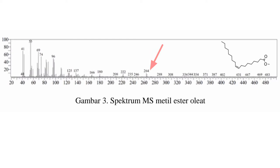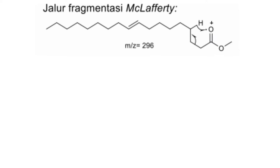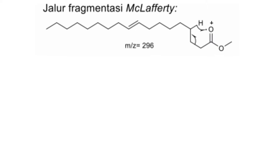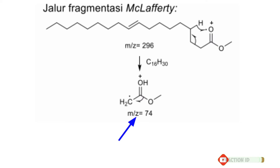Spektrum MS ini dapat dilihat pada gambar 3 dan mekanisme fragmentasinya selengkapnya dapat dilihat pada gambar ini. Untuk teman-teman yang ingin tahu jalur fragmentasi McLafferty senyawa ester, teman-teman bisa nonton video saya yang menentukan pola fragmentasi senyawa part pertama, di sana ada contoh senyawa ester dan akan dijelaskan juga pola fragmentasi dari penataan ulang McLafferty. Penataan ulang McLafferty terjadi karena adanya hidrogen gamma pada senyawa karbonil. Kita bisa lihat di sini alpha, beta, gamma — ini C gamma — lalu hidrogen gamma bergabung dengan oksigen menjadi enol, lalu karbon ini menjadi radikal. Senyawa enol ini terbaca di spektrum masa sebesar 74 m/z. Lalu terjadi fragmentasi lanjutan di mana dia kehilangan O-methyl, sehingga fragmennya terbaca sebesar 43 m/z.